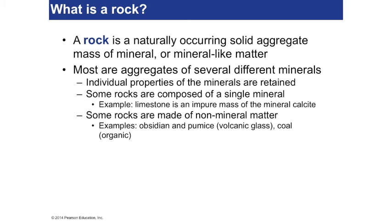It looks like a stone. And if you had a piece of obsidian, which is that black volcanic glass, it's amorphous, so it doesn't have a crystal structure, but you would still think of it as a rock. But rocks primarily you want to think of as composed of minerals, each of which have these criteria we looked at.